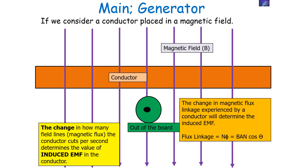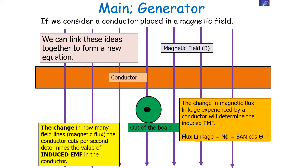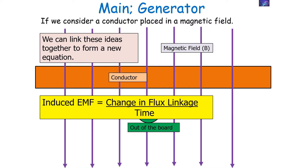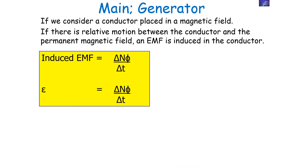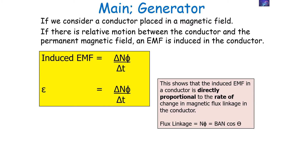We can link these ideas together because we know flux linkage is equal to NΦ, which is also equal to BAN cosθ. Bringing these ideas together, induced EMF is equal to the change in flux linkage divided by time — that is, ΔNΦ divided by Δt. This shows that the induced EMF in a conductor is directly proportional to the rate of change of magnetic flux linkage in the conductor.